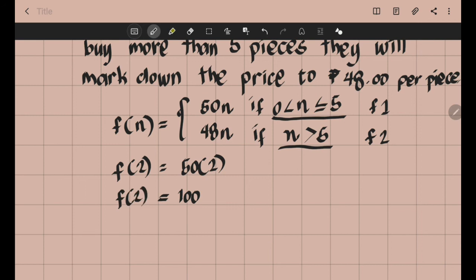But if you will buy 7 pieces, so f of 7. Where does f of 7 belong? Formula 1 or formula 2? Since 7 is greater than 5, it goes to formula 2.